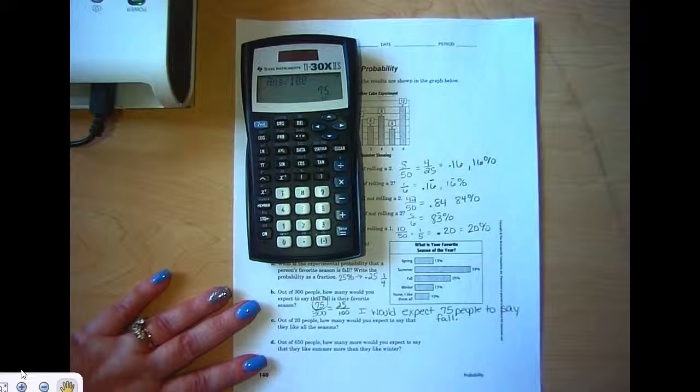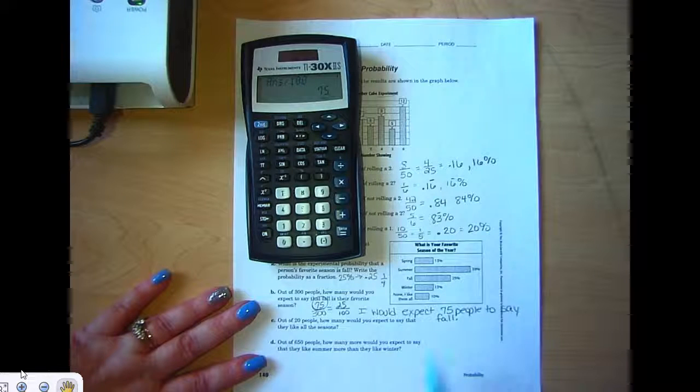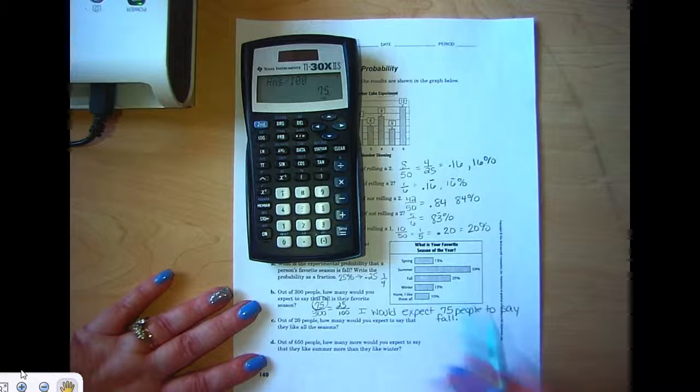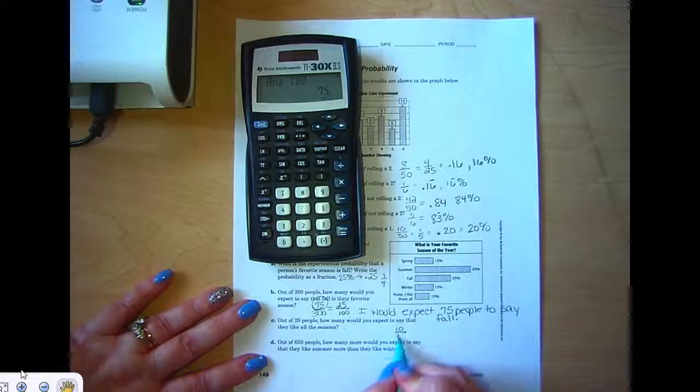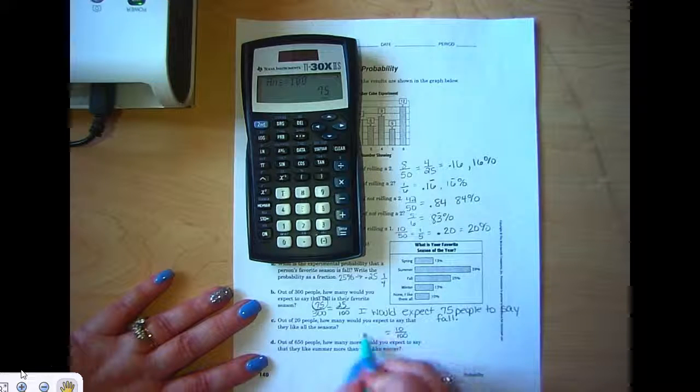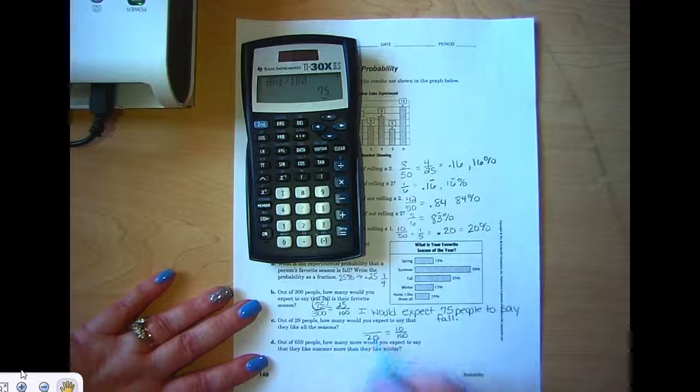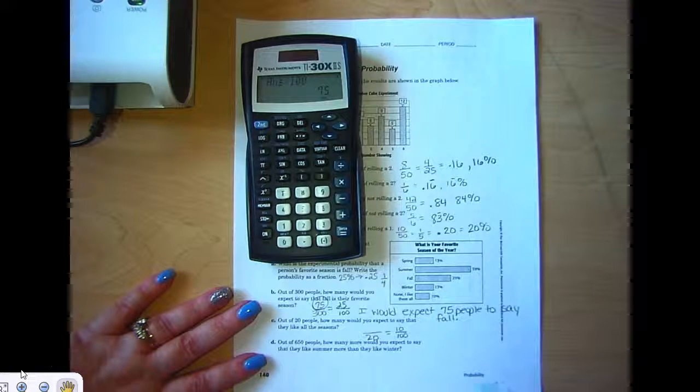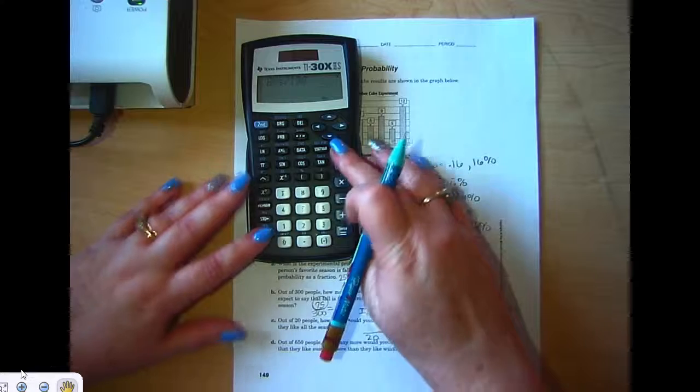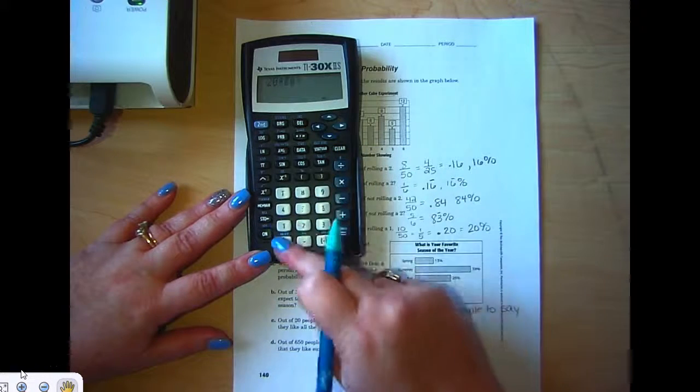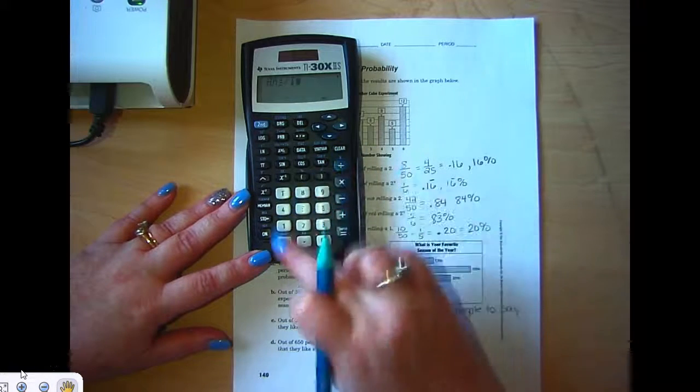Out of 20 people, how many would you expect to say they liked all seasons? All seasons was 10 percent—10 out of 100. So out of 20 people, how many would you expect? I think that's going to be 2: 20 times 10 divided by 100.